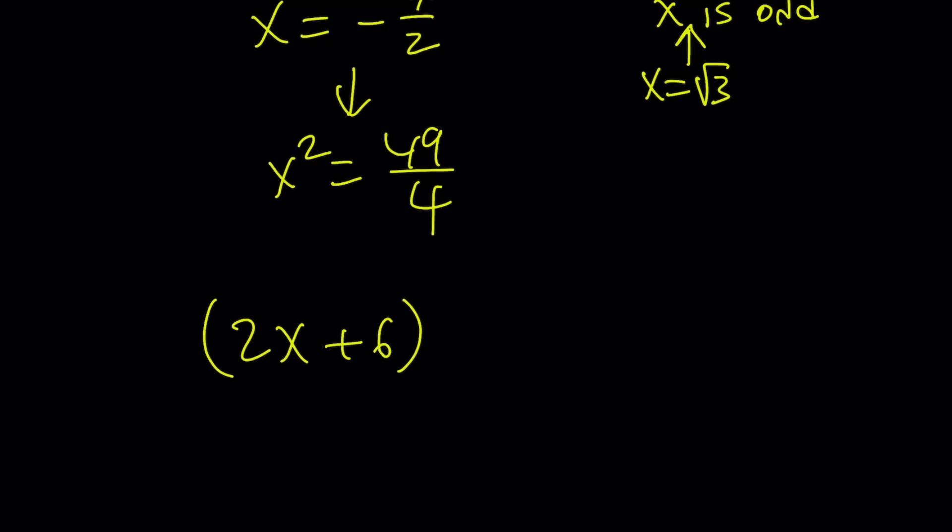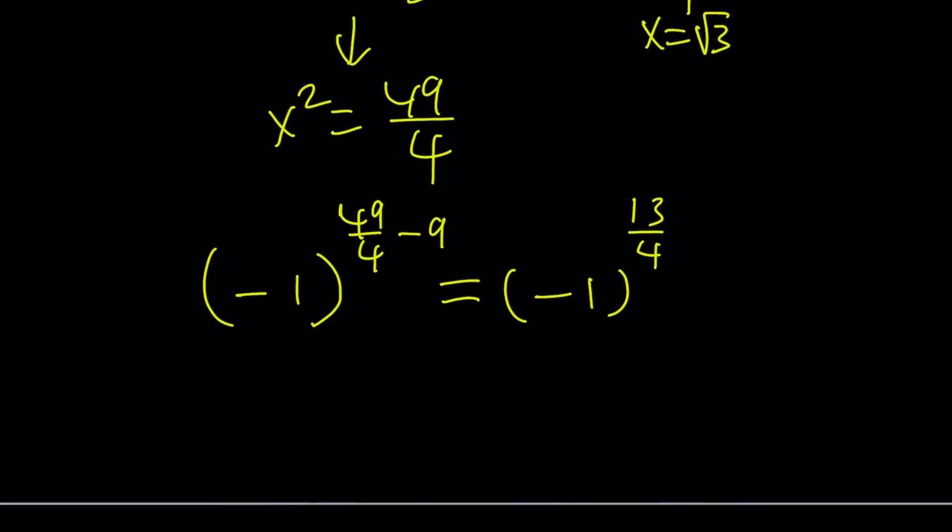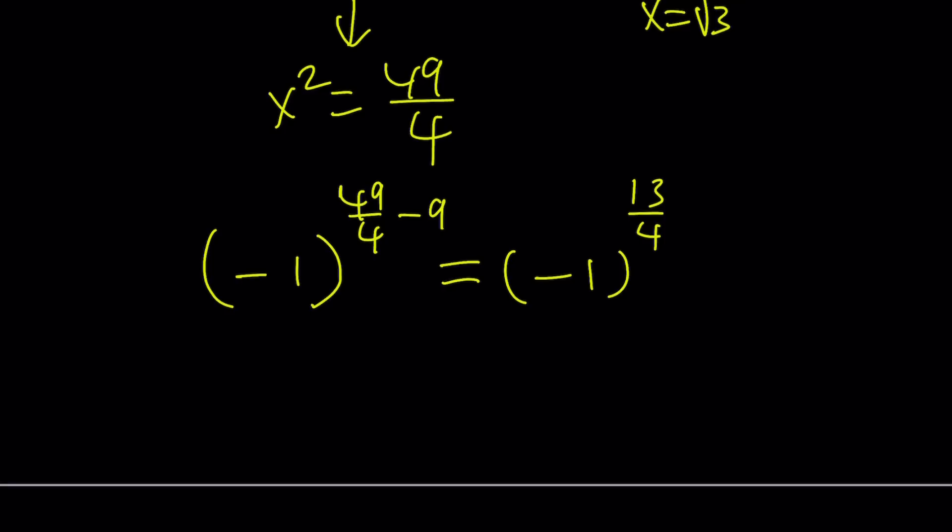So now I'm going to replace x with negative 7 halves, which is going to give us a negative 1 at the base. And the exponent is going to be x squared minus 9. So it's like 49 over 4 minus 9. Let's simplify this. And that's going to be 49 minus 36, that's going to be 13 over 4. So you might be a little confused with this, but don't worry about it. So the exponent is odd. So we can kind of write this as negative 1 to the power of 13 and then the fourth root of that.